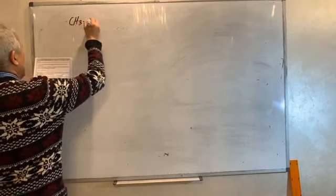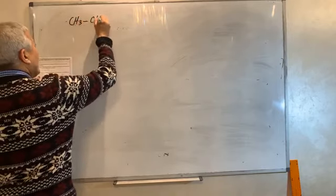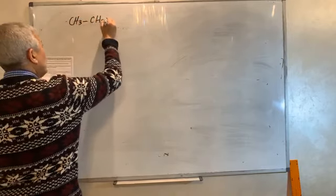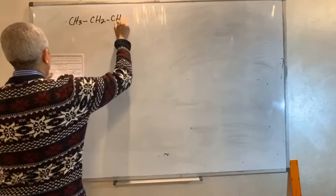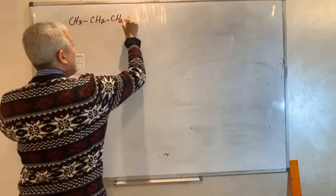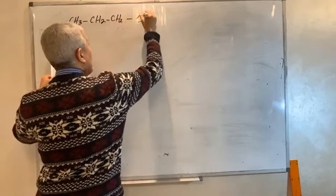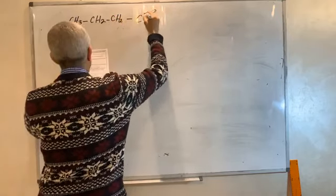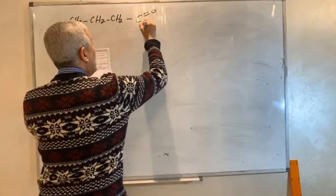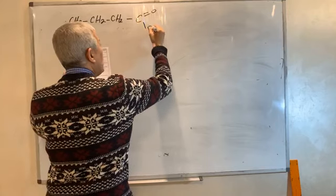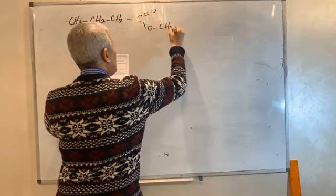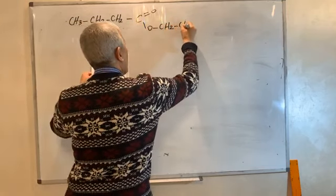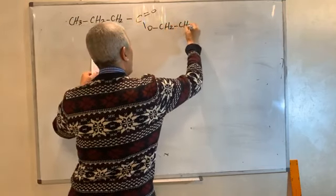La formule semi-développée du butanoate d'éthyle est : CH3 - CH2 - CH2 - C(=O) - O - CH2 - CH3.